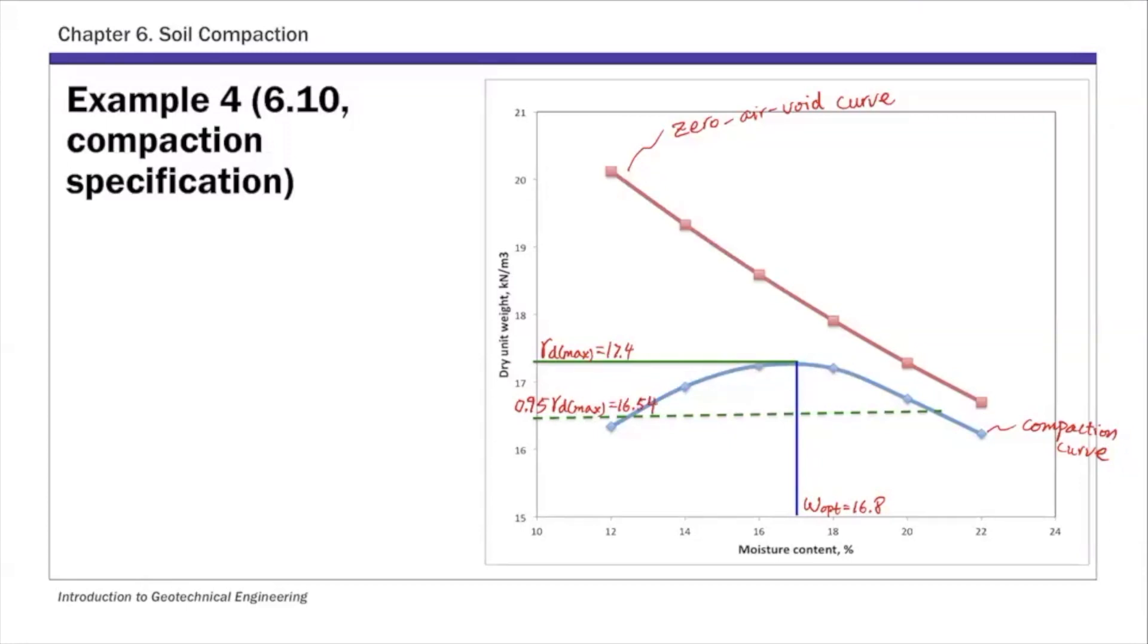And the second specification calls for moisture content within plus minus 2% of the optimum moisture content. So if I mark these two plus two numbers, plus minus two percent. So this is 14.8. And this number here, this is 18.8. So that's the moisture content plus minus two percent of the optimum.